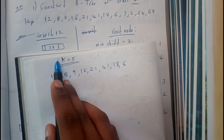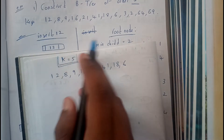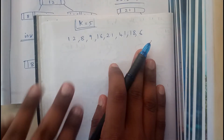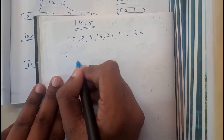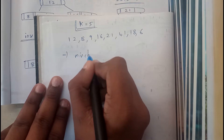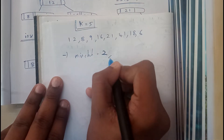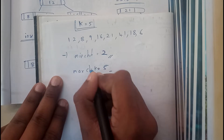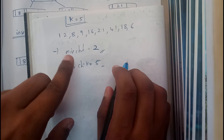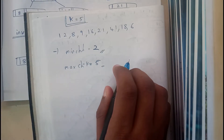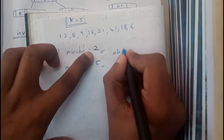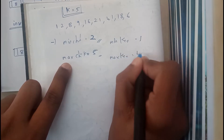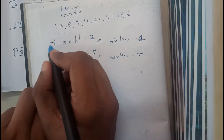Once you get the order as 5, the first point is about the root node. The minimum children should be 2 and the maximum children can be 5, which is k. For n children we will have n minus 1 keys, so for 2 children the minimum keys equals 1, and for maximum children (5) the maximum keys will be 4.